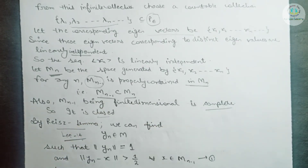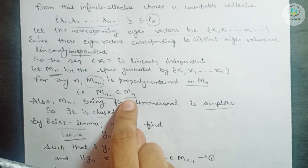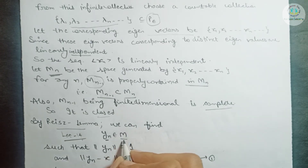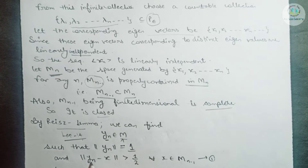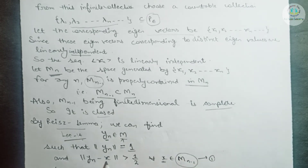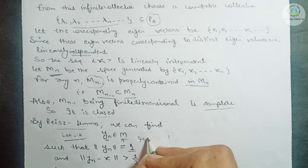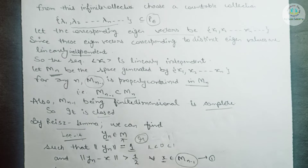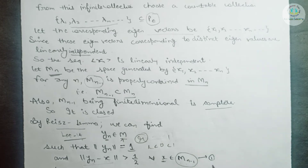Applying Riesz lemma: there exists an element yₙ in Mₙ such that ‖yₙ‖ = 1, and the distance of yₙ from every element x of Mₙ₋₁ satisfies ‖yₙ − x‖ > r. Taking r = 1/2, this distance will be greater than 1/2 for every x ∈ Mₙ₋₁. Mark this as equation number 1.